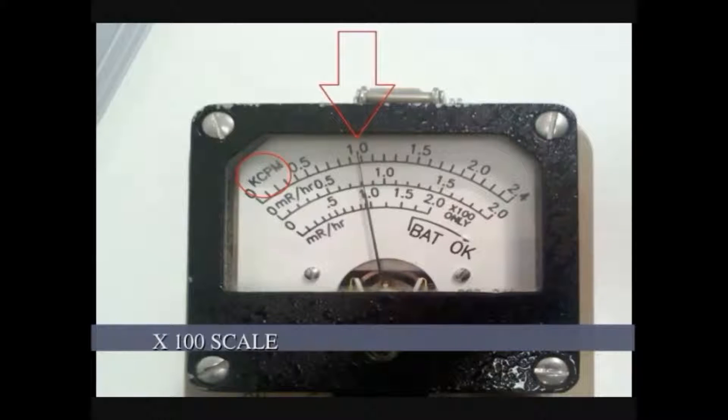The beta response is 100k or 100,000 counts per minute.